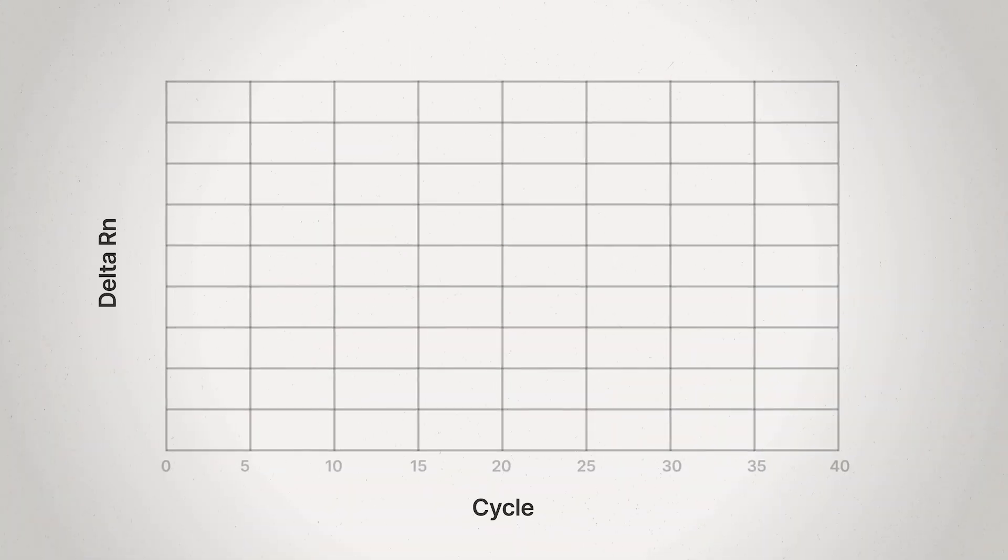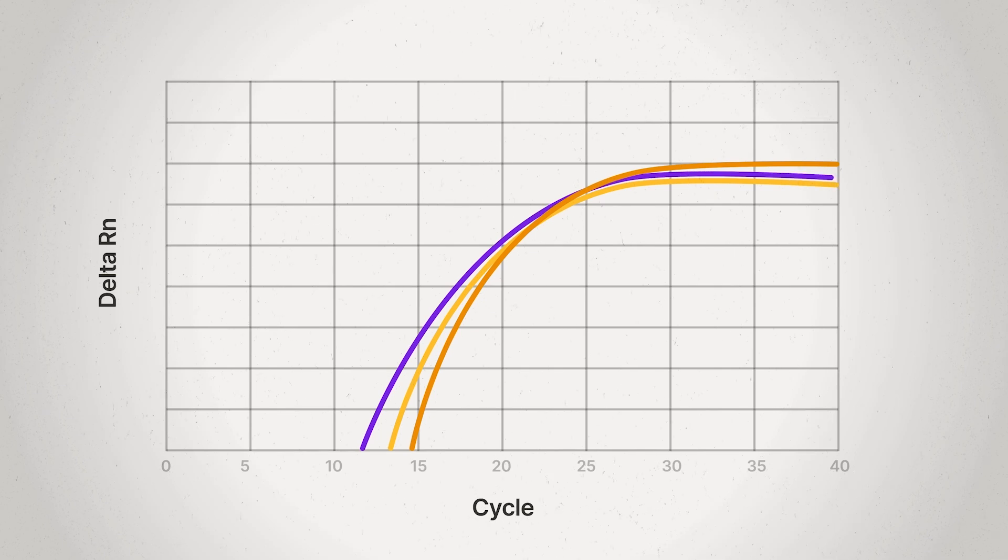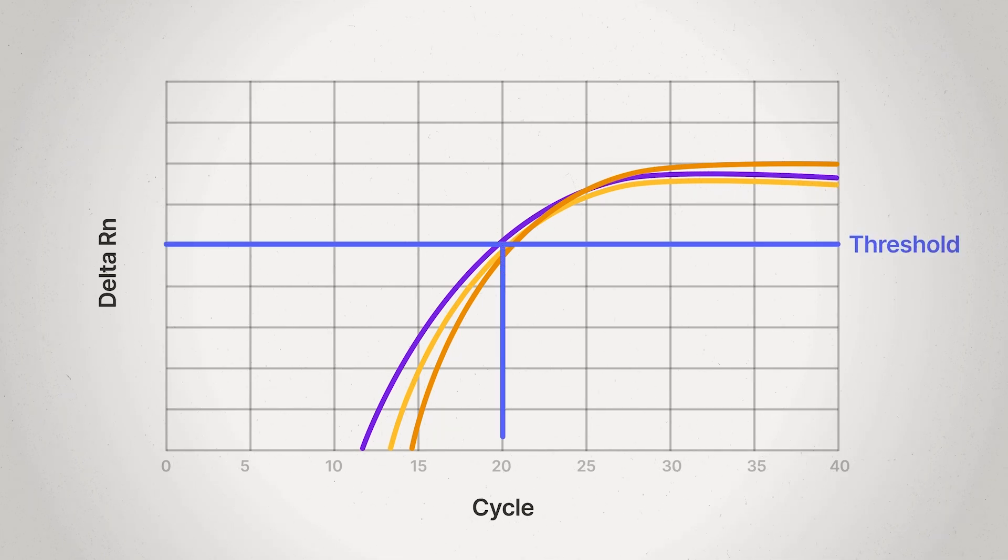For sufficient input, users can use quantitative PCR or qPCR to measure their target of interest. A general rule of thumb is a cycle threshold or CT value of less than 30 is indicative of robust results.